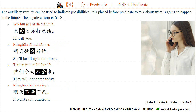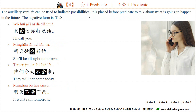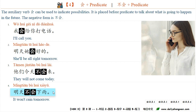语法点四：the auxiliary verb 会 can be used to indicate possibilities. It is placed before the predicate to talk about what is going to happen in the future. For example: 我会给你打电话。明天她会好的 — She will be alright tomorrow. 她们今天不会来。不会 is the negative form. 明天不会下雨 — It won't rain tomorrow.